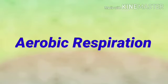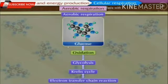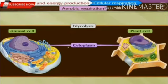First, aerobic respiration. For aerobic respiration, there is a need of oxygen — without oxygen, this process cannot be done. In aerobic respiration, glucose is oxidized into three steps: first, glycolysis; second, the Krebs cycle, also called the tricarboxylic acid cycle; and third, the electron transfer chain reaction. Let's start the first process in aerobic respiration.